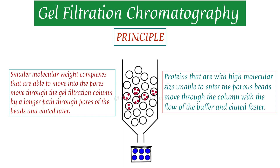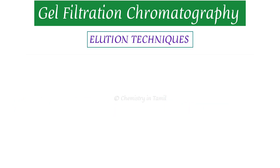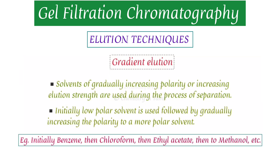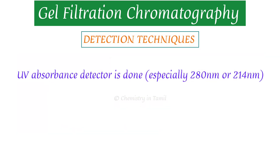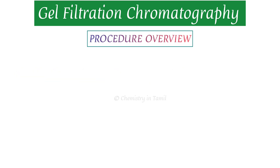Looking at the molecular size separation further, there are two types of elution: isocratic and gradient elution. For more details, you can see the column chromatography video — the link is in the description. For detection, you can use a UV absorption detector to detect components separated by gel filtration chromatography.